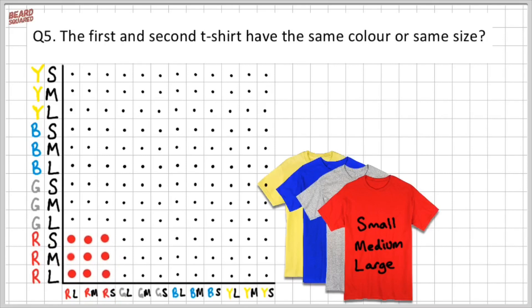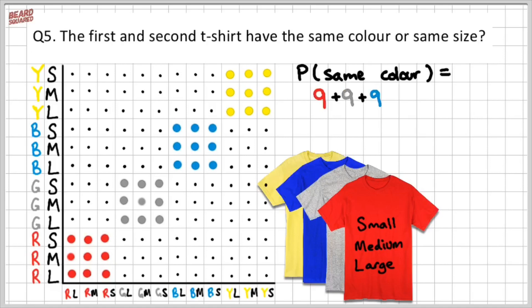Now the same principle applies for the gray t-shirts, and the blue t-shirts, and the yellow t-shirts. So if I'm looking for the probability of the first and the second t-shirt being the same color, then that would be 9 plus 9 plus 9 plus 9 over 144, which is 36 over 144. And that can be simplified down to 1 over 4, so one quarter.